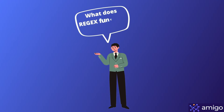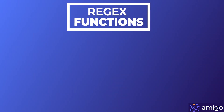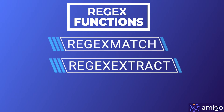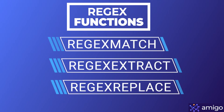Customized searching is necessary to perform niche searches when working on a lot of data. To achieve that, we use regular expressions. There are mainly 3 regex formulas in Google Sheets that you can use: regex match, regex extract, and regex replace. These names are self-explanatory as they perform match, extract, and replace respectively.